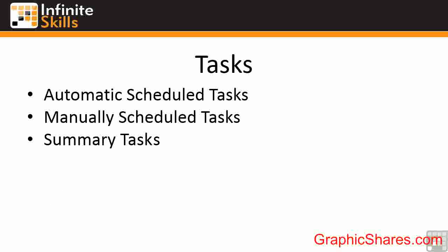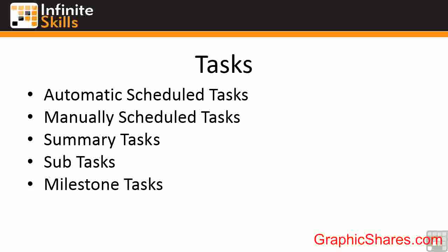Tasks have different types. You can have summary tasks that summarize a section of other tasks. There are sub-tasks, which are each of the individual steps within a summary task section. There are milestone tasks, which are simply a point in time — the end of a section, a milestone that you've reached. And then there is the project summary task, an overall task to look at the whole project.